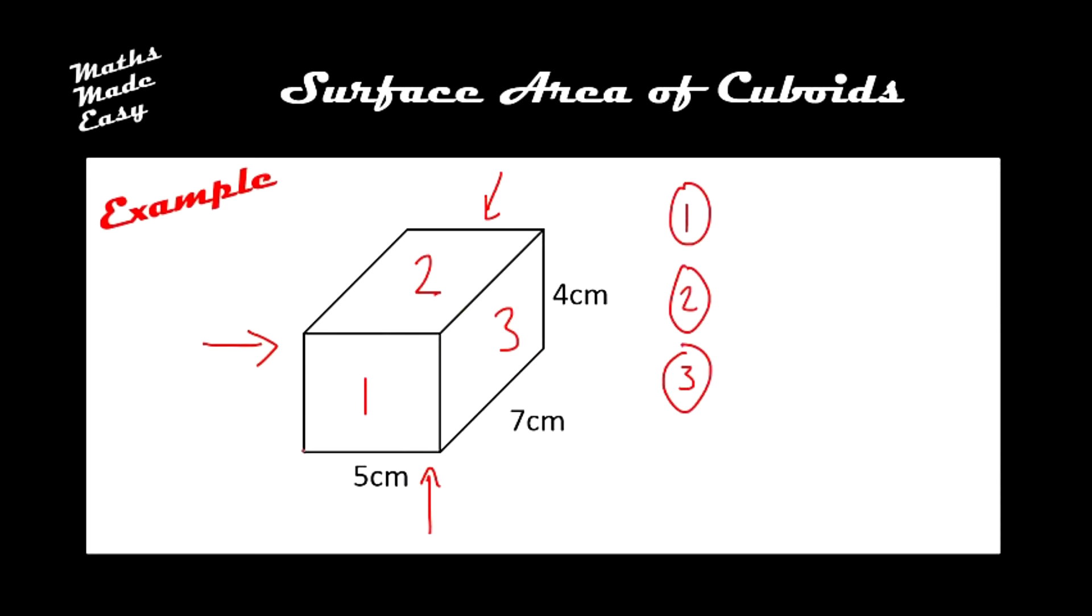So the first one here, number 1, well it's 5 along the bottom here, and then it's 4 high, so we need to do 5 by 4 which is 20. So 5 times 4 is 20, that gives us the area of that face number 1 there.